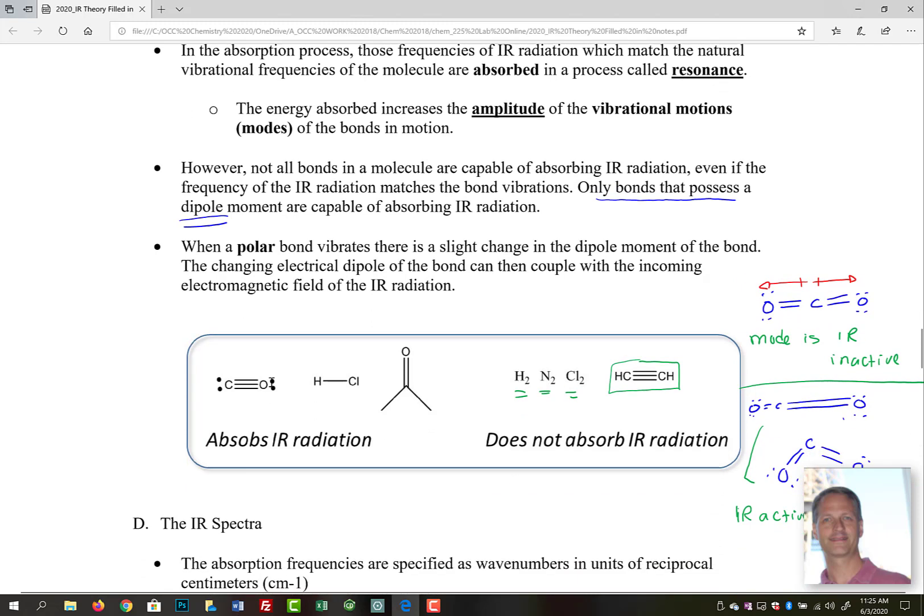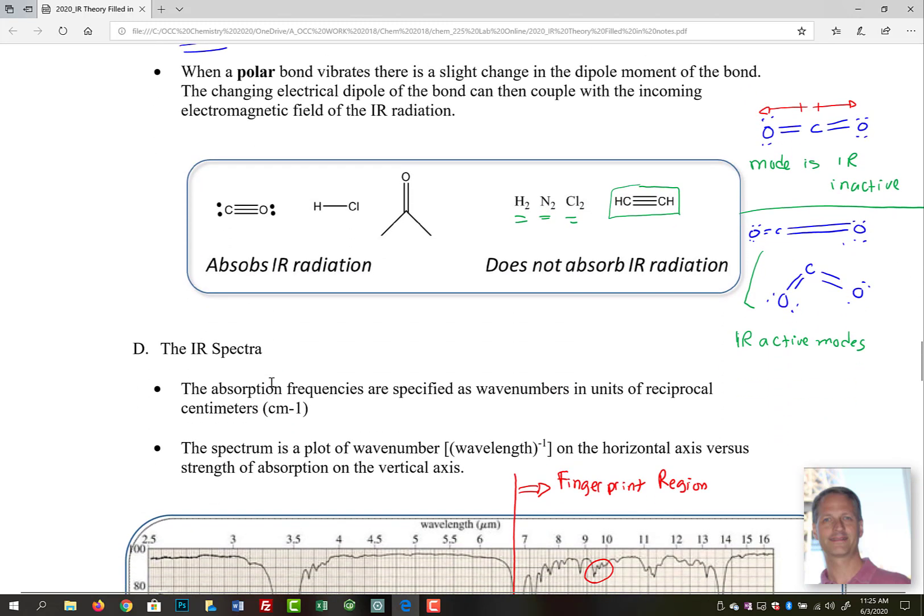The important thing to point out is that in order for a molecule to be IR active, the mode in which it moves, the way that it's vibrating, has to create a change in dipole. If we look down here below, these molecules absorb IR radiation because they all possess dipoles. These do not—they are called IR inactive. Diatomic molecules or molecules that have symmetrical construction are not going to have dipoles when they stretch. There are certain modes of molecules that are IR inactive and certain modes of that same molecule that are IR active.